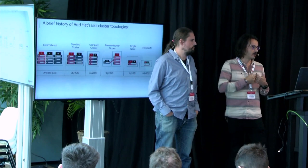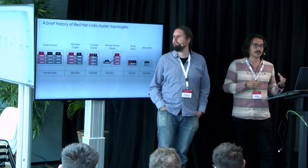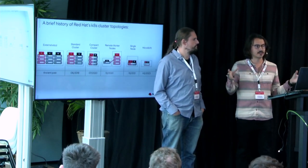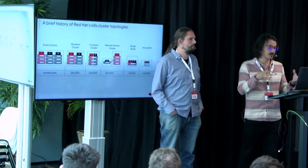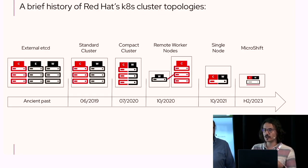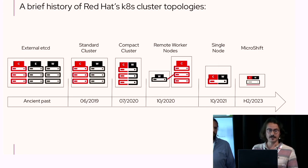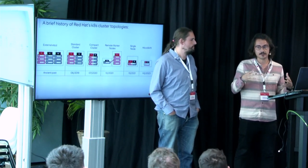Red Hat has been working for years adapting OpenShift to different topologies and environments. We started from the standard cluster, then we created a compact cluster where control plane and compute nodes share the same three nodes. Then another topology was remote worker nodes, and then single node. One year ago, we introduced MicroShift at the OpenShift Commons event. Last October, we announced Red Hat Device Edge, which is the offering that combines an edge-optimized operating system with MicroShift as the lightweight Kubernetes runtime.